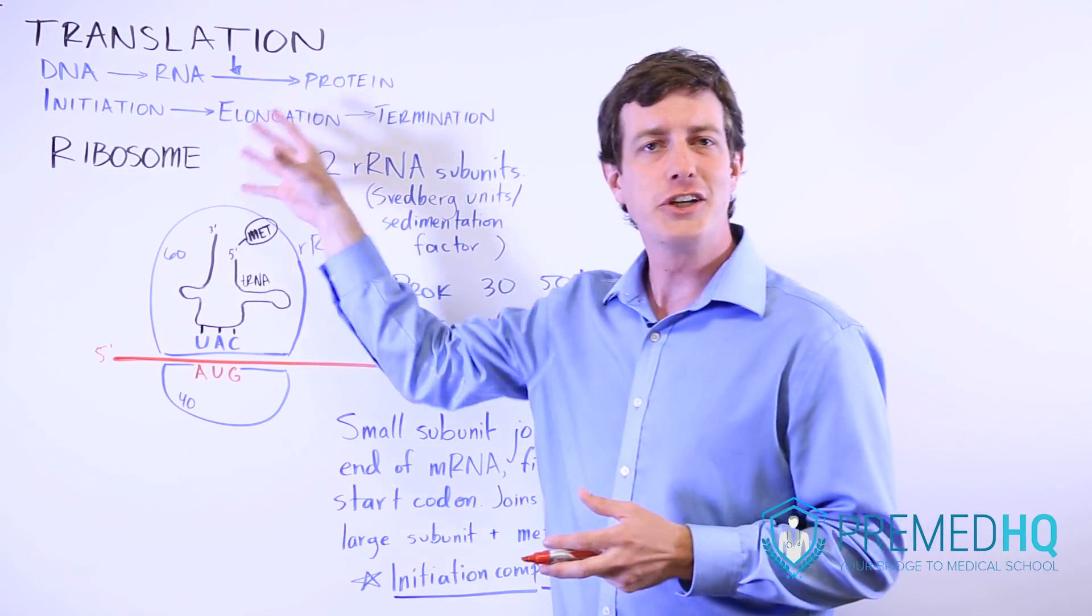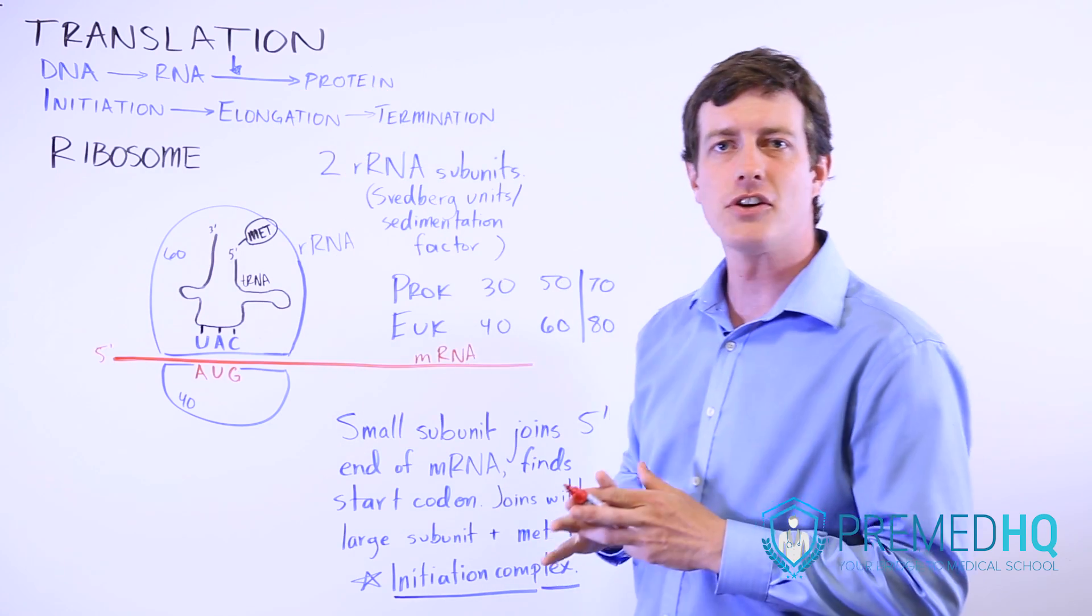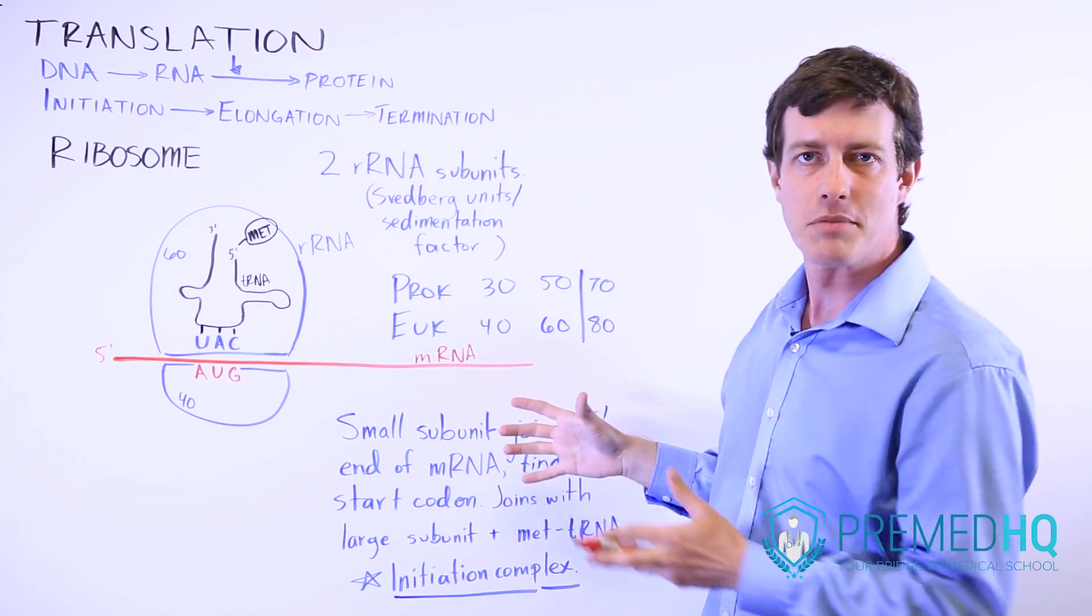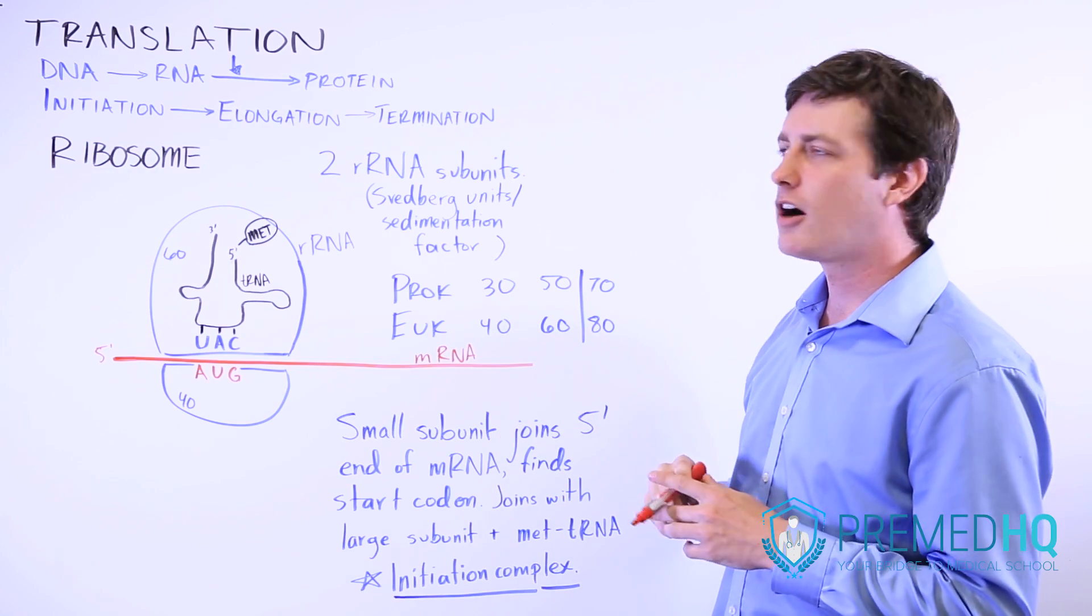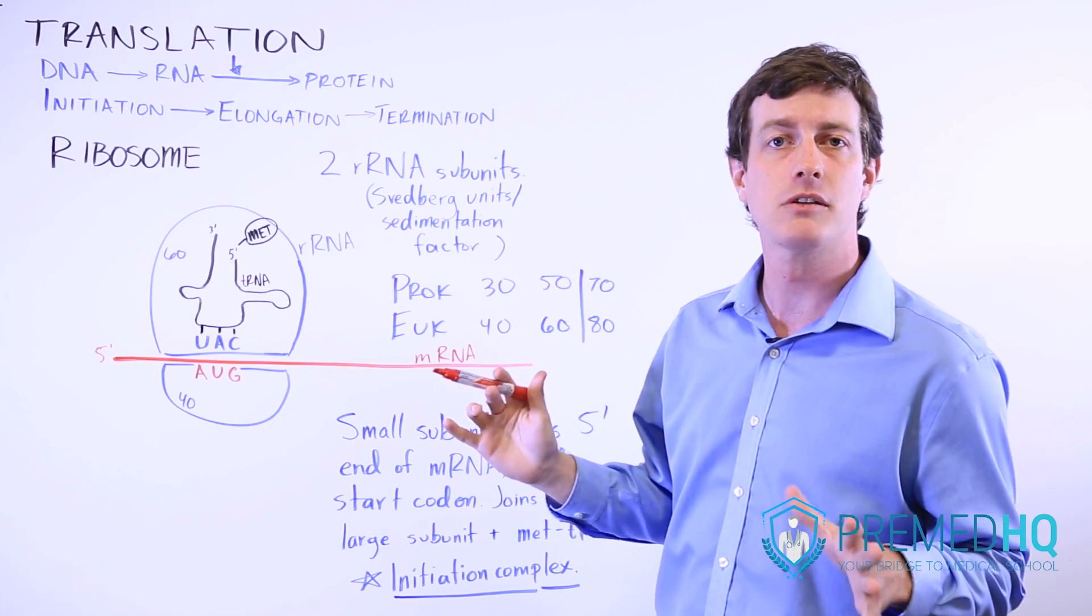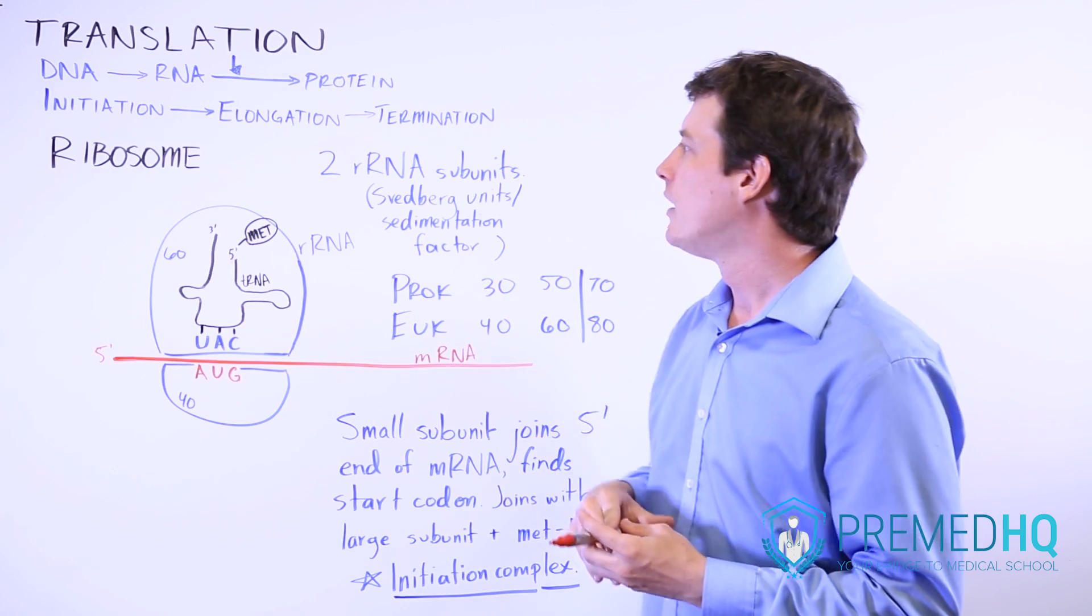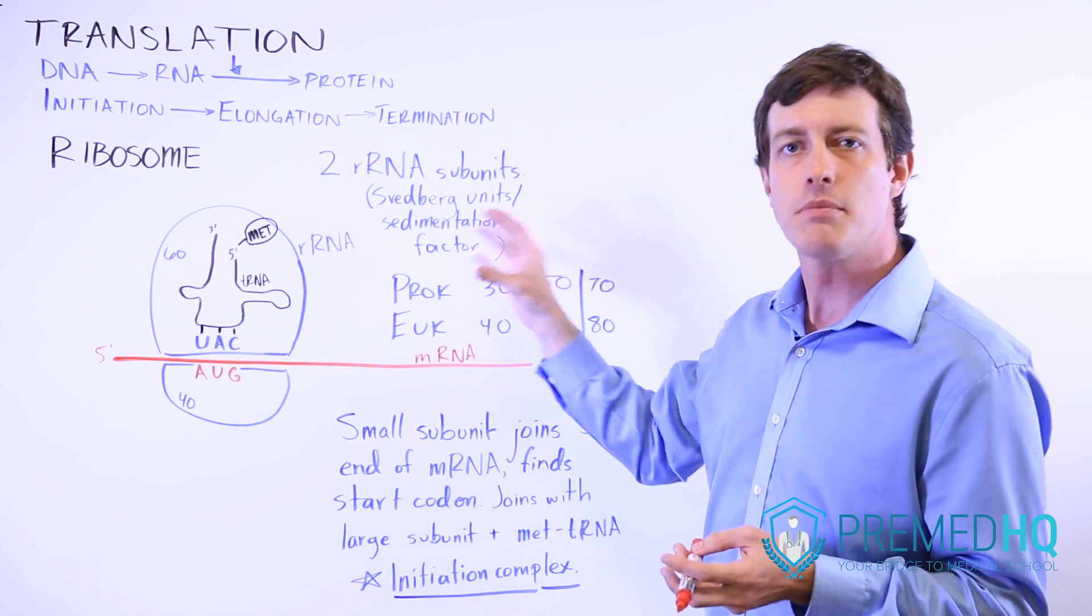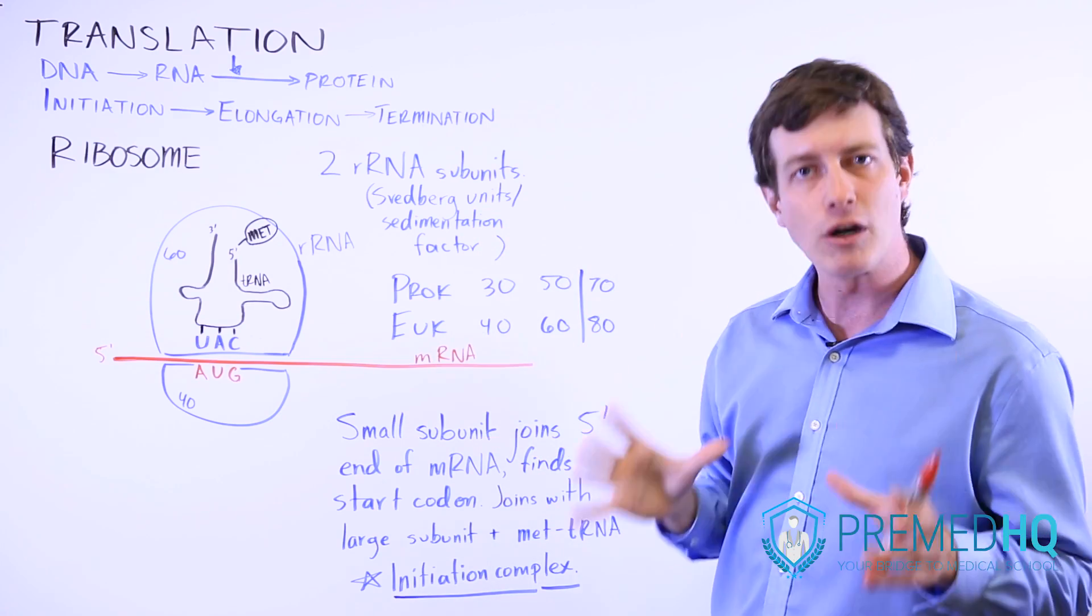We'll start with the initiation phase of translation. For initiation to happen, you need to be able to form the ribosome. Remember that there are two main types of ribosomes: free-floating cytosolic ribosomes, and ribosomes bound to the rough endoplasmic reticulum. The ribosomes being there is what makes it the rough ER.